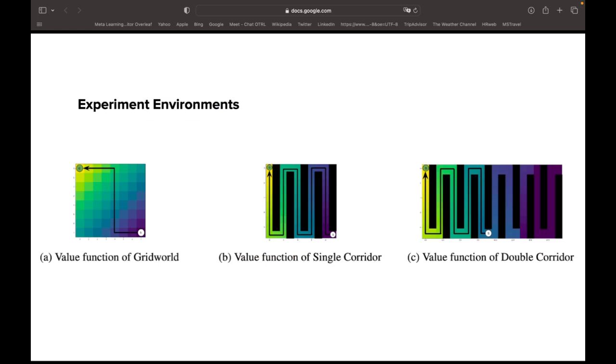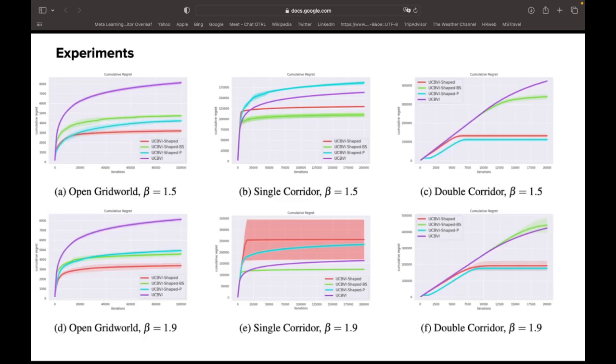Thus we finish our theoretical results. We evaluate our methods in three grid world environments. The first one is a simple square grid where the agent is tasked with going from the bottom right corner to the top left corner. The middle one is a single curved corridor and the third is a bidirectional corridor.